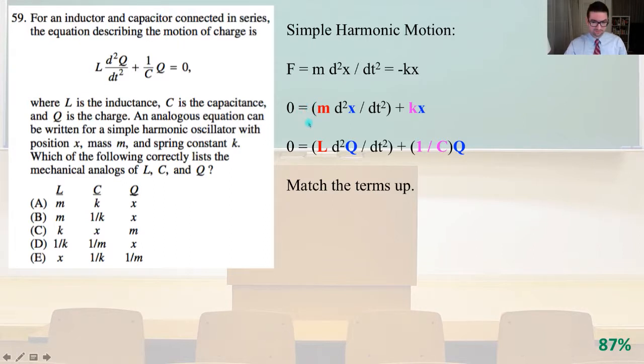For simple harmonic motion, we have F = M(d²X/dt²) = -KX. Setting that equal to 0, we would have M(d²X/dt²) + KX = 0. In our problem it's stated that 0 = L(d²Q/dt²) + (1/C)Q. If you line up the terms, M and L line up, X and Q line up, and 1/C and K line up. Matching them up, that is answer B, and those are the mechanical analogues.